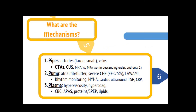Following the acute decision-making, the thought process moves to identifying the mechanism for the ischemic stroke. There are essentially three basic mechanisms: the pipes, the pump, or the plasma. The pipes can be divided into small and large arteries, and less commonly the veins. The best test for pipe imaging is CT angiogram, followed by carotid ultrasound, followed by MRA with contrast, and lastly MRA without contrast.